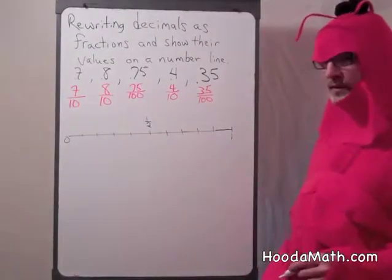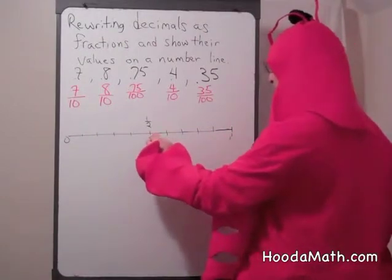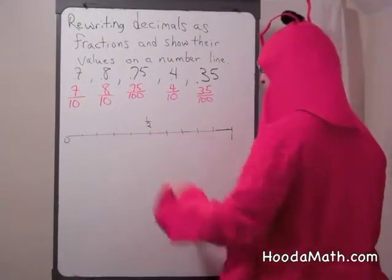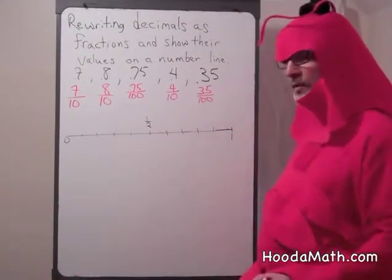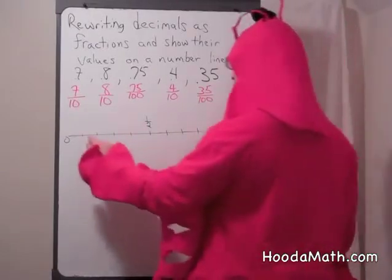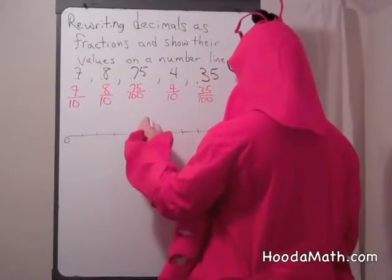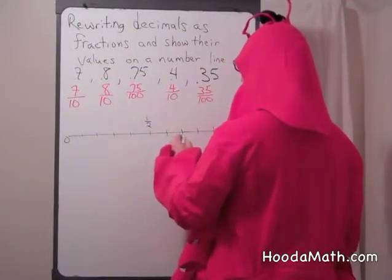Now let's see if we can put them on the number line. If this is 0 and this is 1, and halfway is 1 half, let's see what we can do. Now I've put markers for each tenth: 1 tenth, 2 tenths, 3 tenths, 4 tenths, 5 tenths which is the same as 1 half, 6 tenths, 7 tenths.